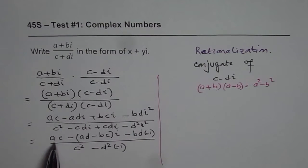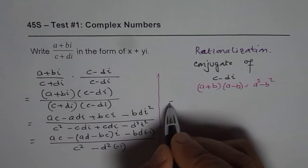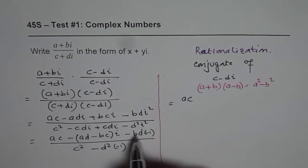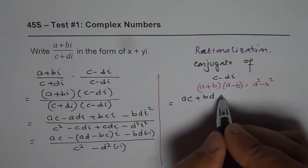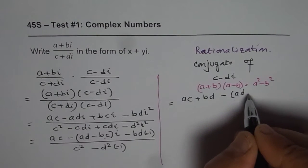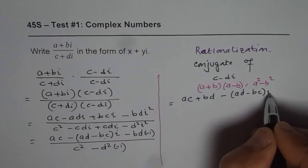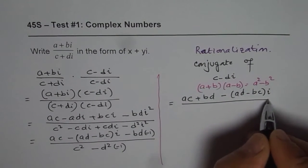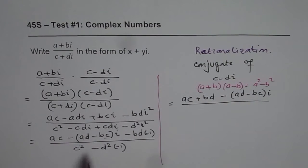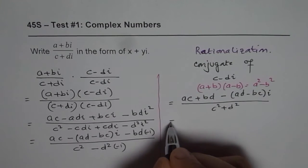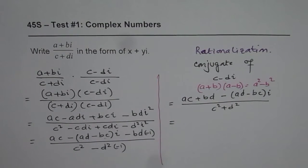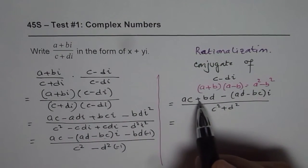So what we have here is, real part here is equals to ac and minus and minus become plus, plus bd. And the imaginary part is minus ad minus bc i divided by, minus and minus is plus, so we get c square plus d square. Now we can write it as two different parts.